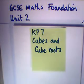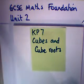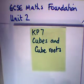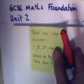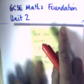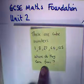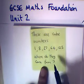Hi, this is Key Point 7, and Key Point 7 is Cubes and Cube Roots. First of all, we need to define what we think of as a cube number. So these are the cubed numbers here. They are 1, 8, 27, 64 and 125.